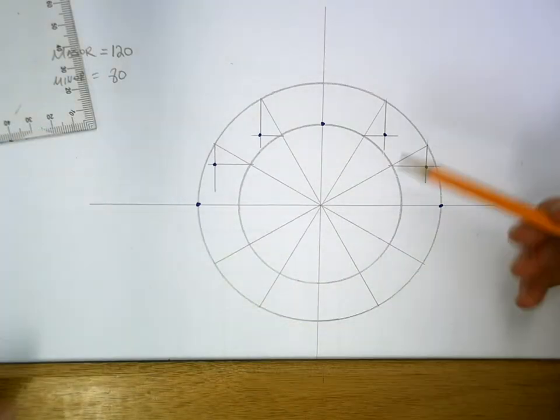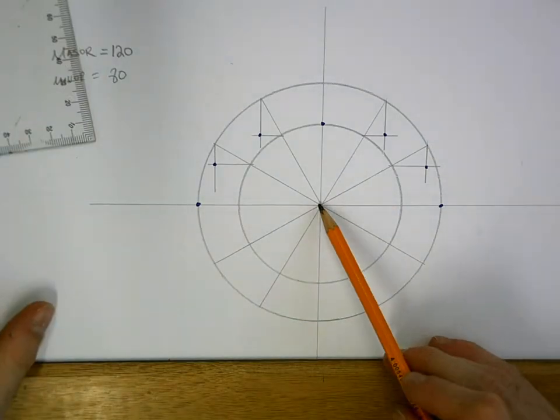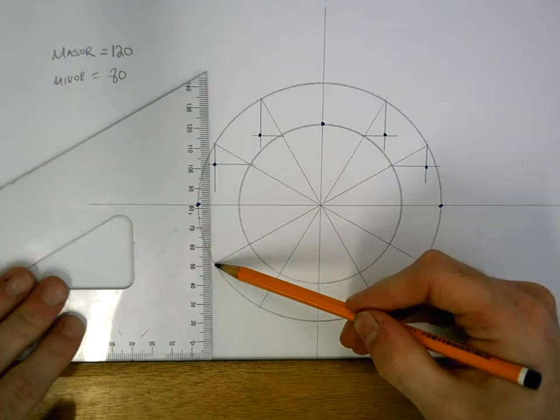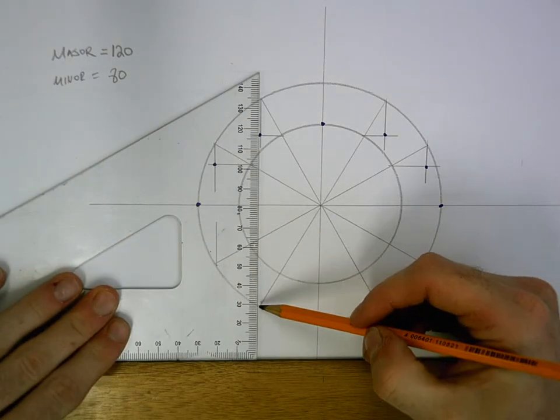The bottom of the ellipse is done exactly the same, except this time, when I'm following my angle line out, it hits the large circle. I'm not going to drop it down this time. Instead, I'm going to bring it up. So it's just the reverse.